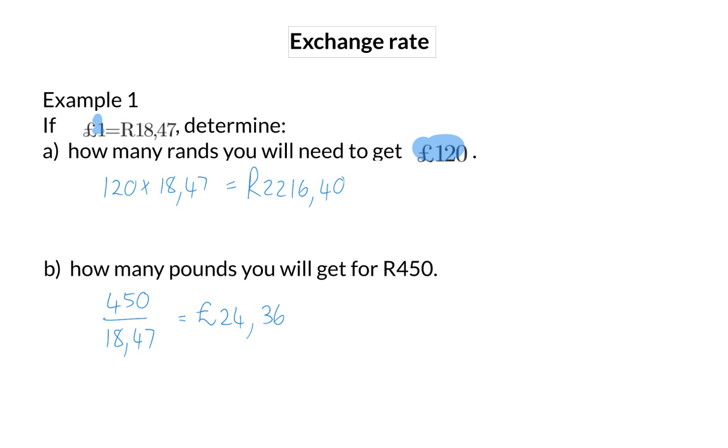From these two examples, you could see that when you receive information about the currency that is given as one in the rate, you will always multiply. And when you are given information about the currency on the other side, you will always divide.